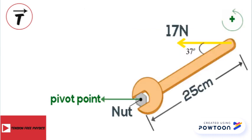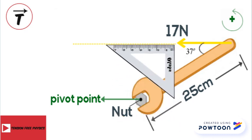We still have to find the distance D. We extend the line of action of the force, then we put one of the sides of the set square on the line of action of the force, and we move the set square until we reach the pivot point.